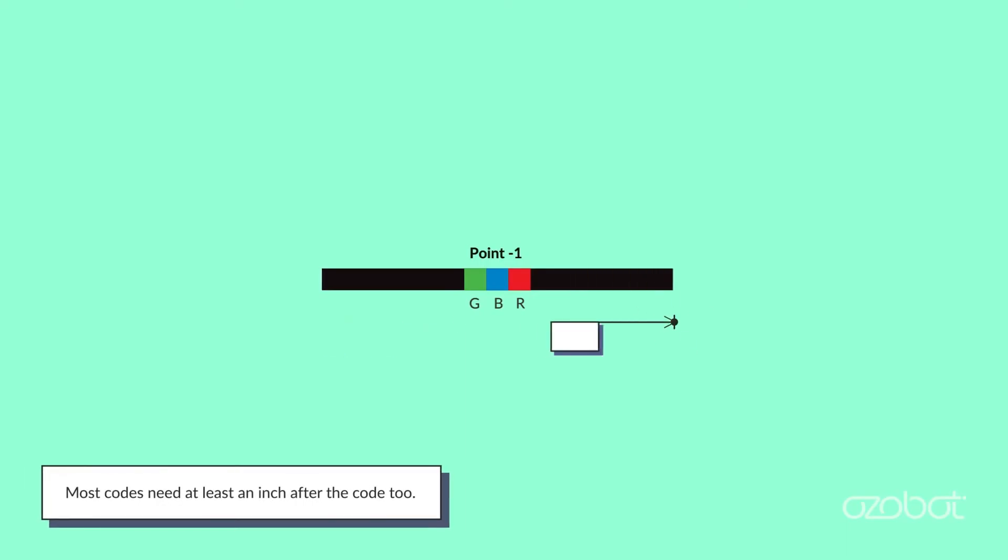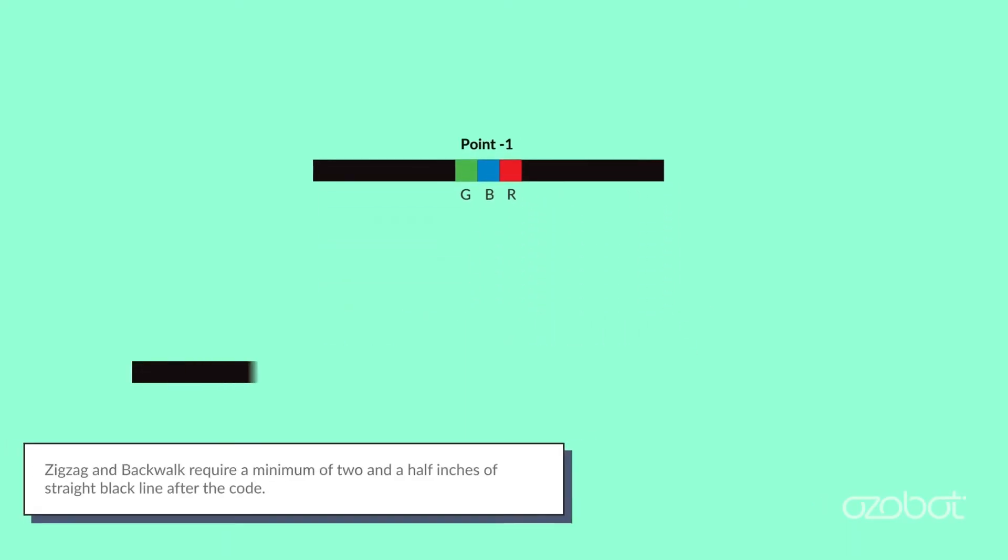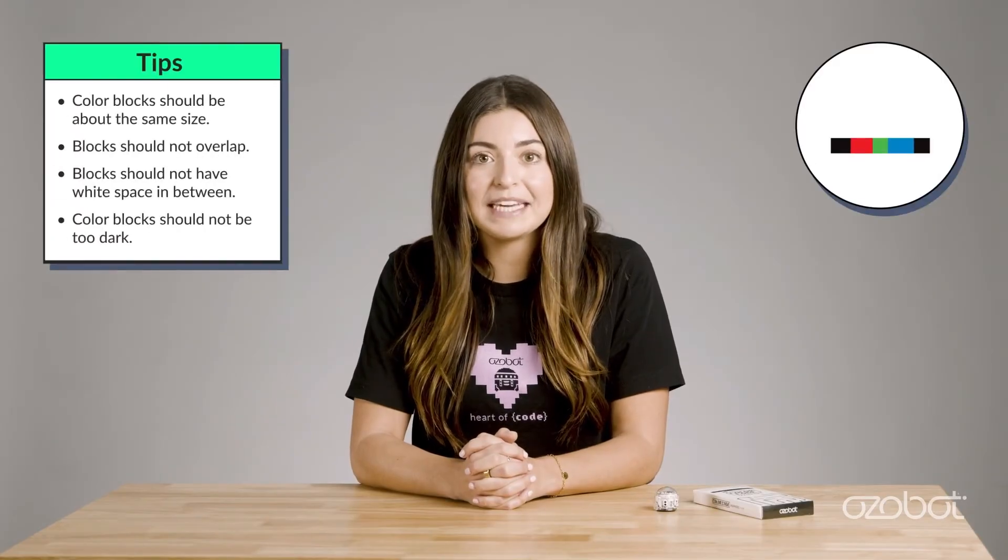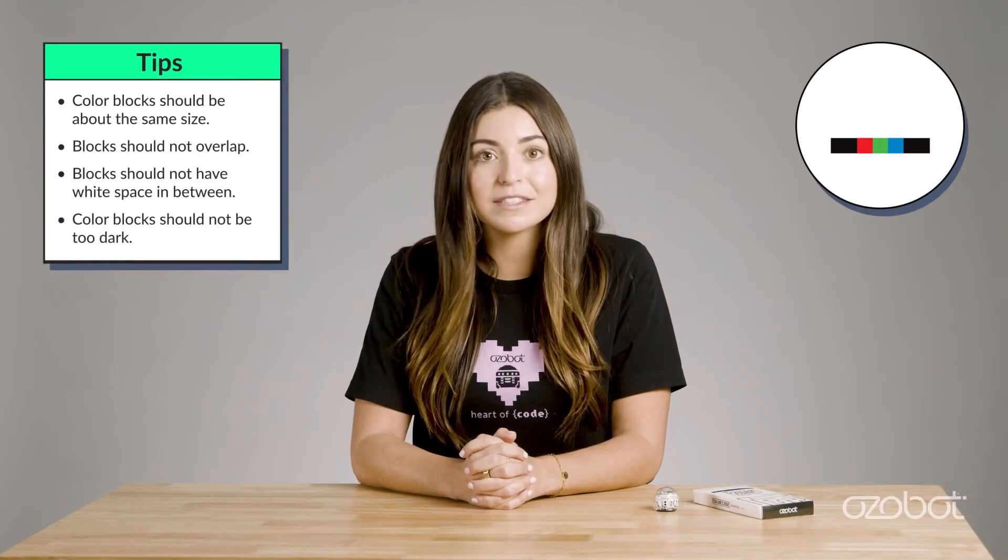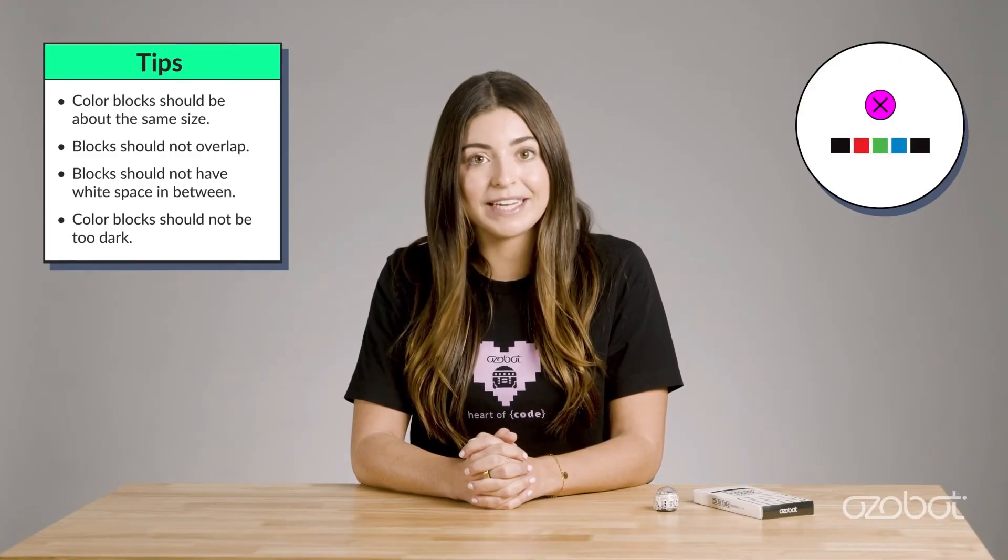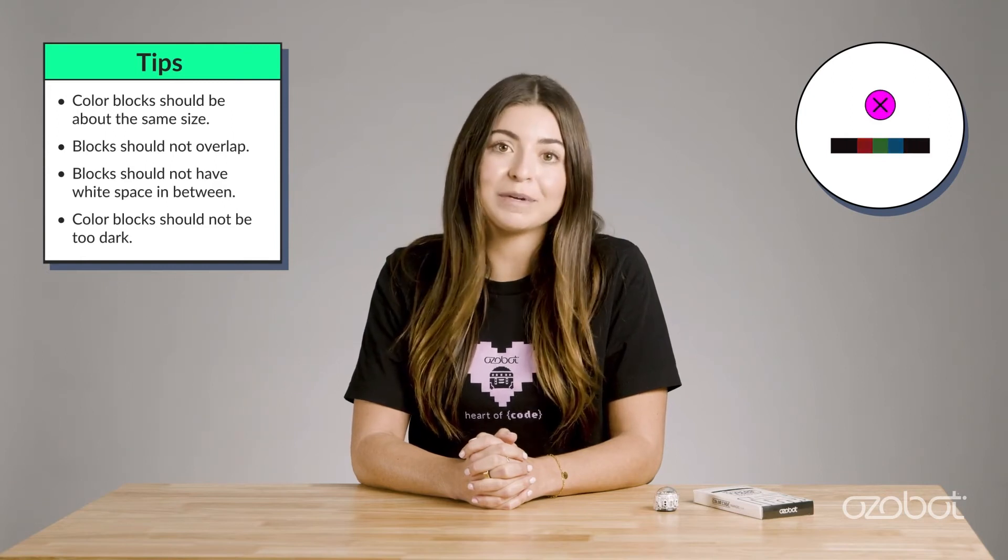Note that for Ozobot to read a color code correctly, there needs to be at least an inch of straight black line before the code without any codes or intersections. Most codes need at least an inch after the code too, but some codes need up to two and a half inches of straight black line after the code to perform the code properly and continue line following. Just a few more tips about color codes: color blocks should be about the same size, blocks should not overlap, blocks should not have white space in between, and color code blocks should not be too dark.